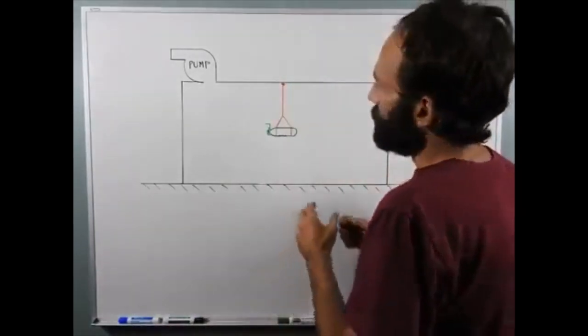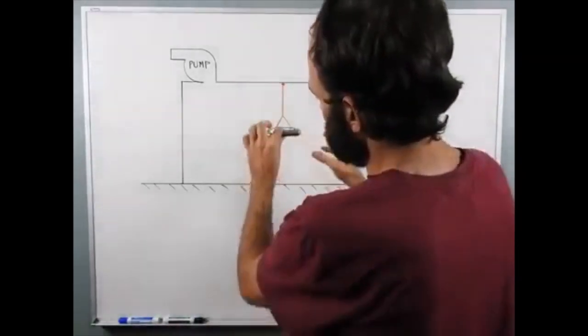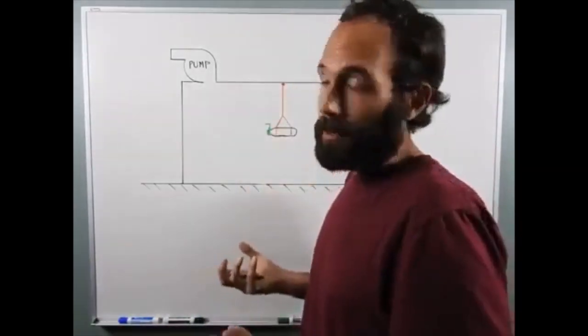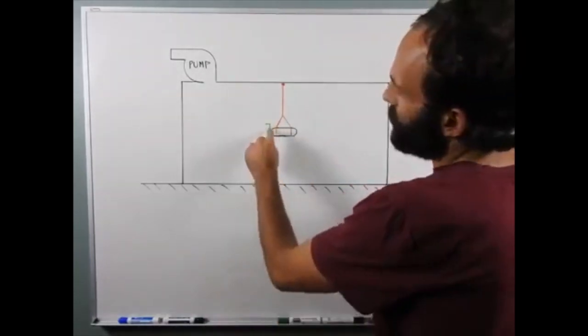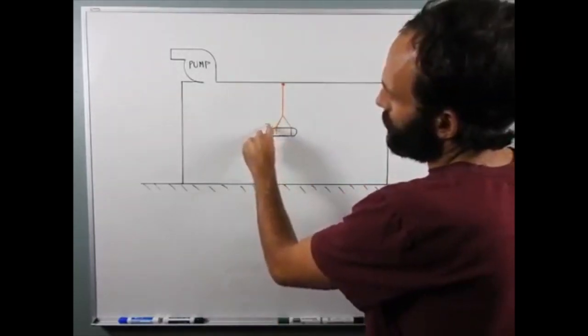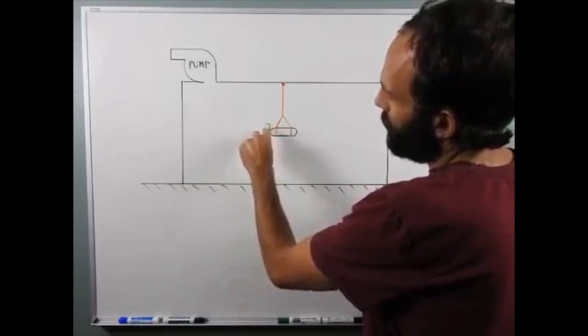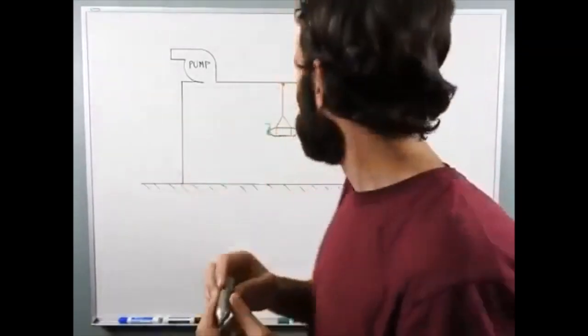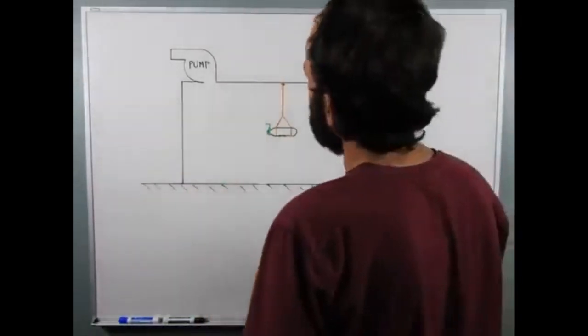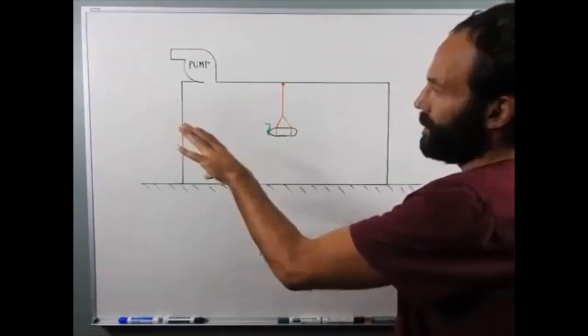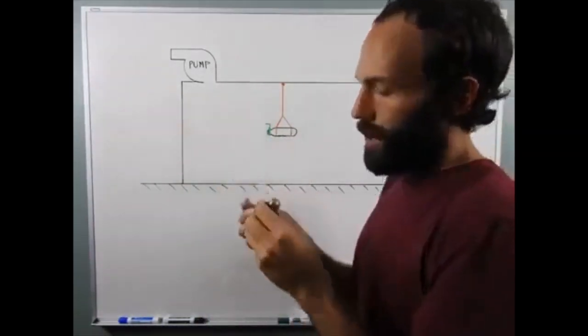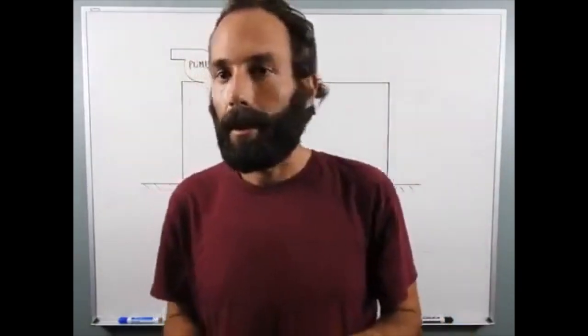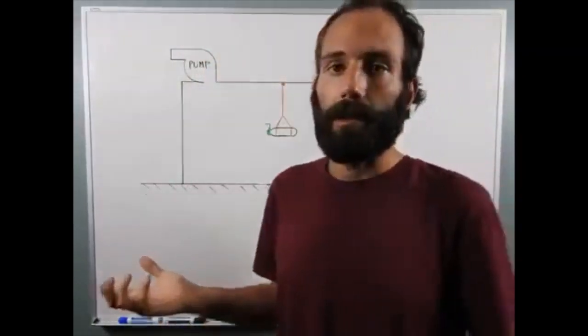The idea would be that we suspend it from a string because we have to deal with weight on Earth, and we'd rig up something, this little green line here, some kind of pin that would rotate and puncture the end of the CO2 cartridge. That would spray the contents out, and we'd be able to test whether it works or not.